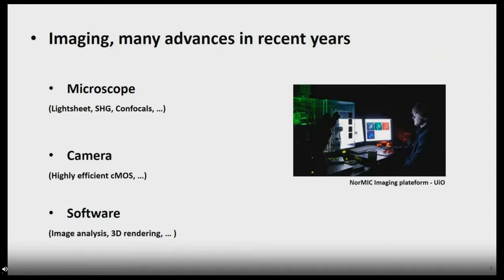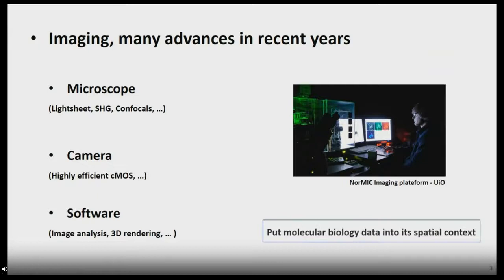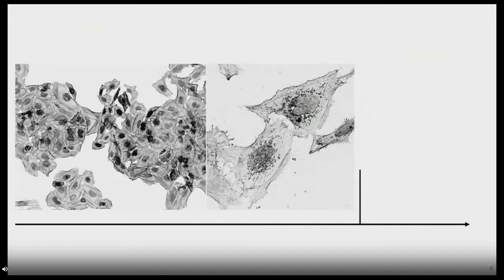In recent years there have been many advances in imaging — whether new kinds of microscopes such as light sheets, or great improvements of confocal microscopes, both conventional and spinning disk. These have also benefited from improvements in cameras that allow us to acquire data at much higher resolutions and sensitivity. Of course, with so much imaging data, you also need improvements in software. All these improvements now allow scientists to place molecular biology data into spatial context.